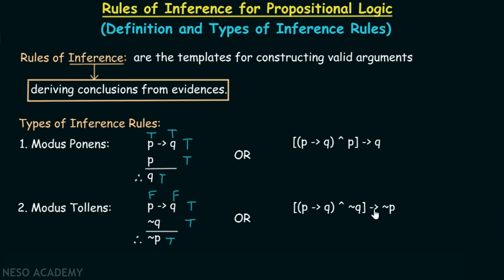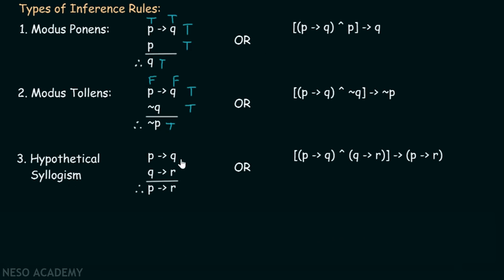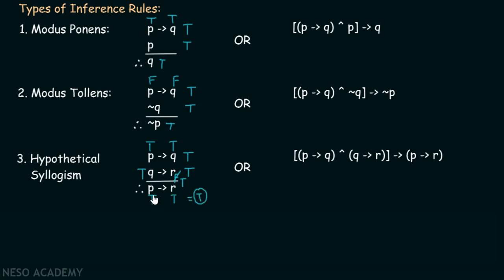The third rule is hypothetical syllogism: p implies q, q implies r, therefore p implies r. If p implies q is true and q implies r is true, then p implies r has to be true. Let's try to make p implies r false by taking p true and r false. If p is true, then q cannot be false — q has to be true. And because q is true, r cannot be false; r has to be true. So if r is true and p is true, then true implies true is always true. Therefore, we cannot make p implies r false. We can write this argument as: p implies q, and q implies r, implies p implies r.